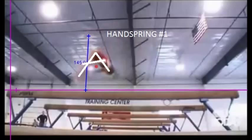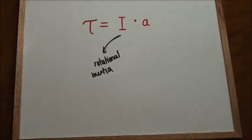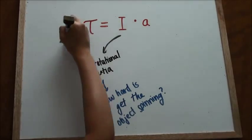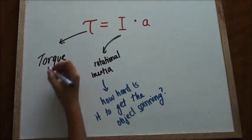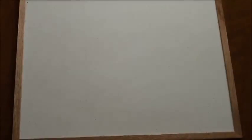This can be explained by rotational inertia, which is the measure of how difficult it is to get an object to start spinning. This is directly proportional to mass and distribution of mass relative to the axis of rotation, which is shown in the equation torque equals moment of inertia times angular acceleration.